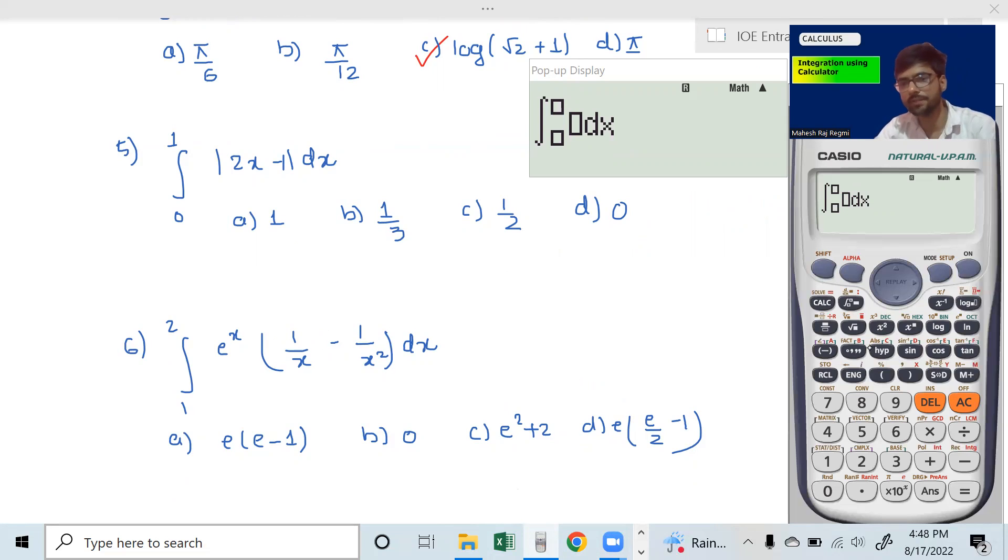Modulus, absolute value. Shift, absolute. The absolute answer: alpha x minus one. From zero to one.